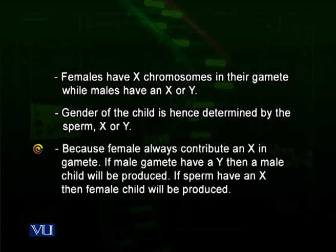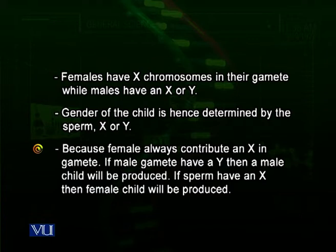The gender of the child is determined by the male gamete and not the female gamete. If the male gamete has an X, then two X chromosomes combine and a female child is produced. If the male gamete has a Y chromosome, the 23rd pair becomes XY and a male child is produced.